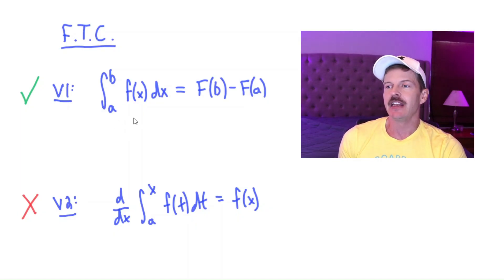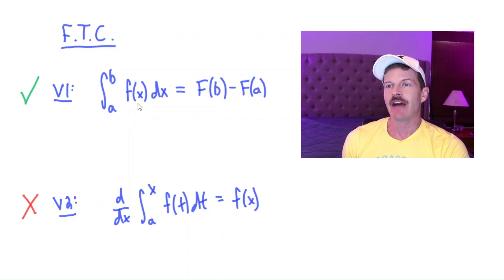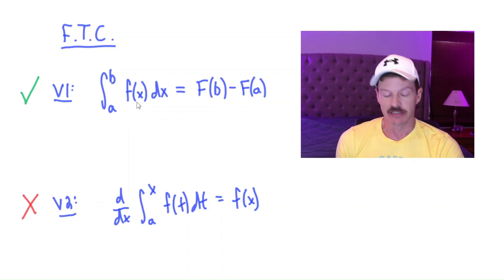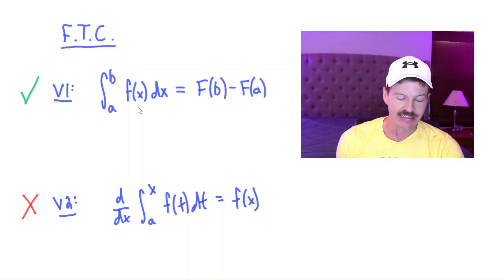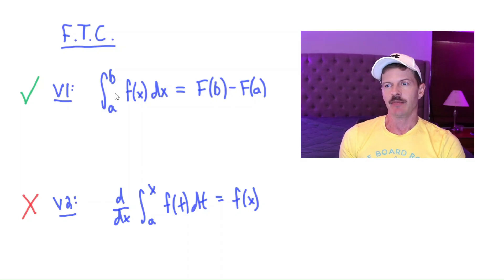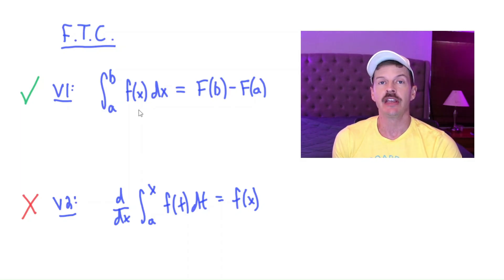Remember, the definite integral means the area underneath the graph of f between a and b — assuming f is a positive function. If f is not positive, we mean the net signed area between the graph of f and the interval a to b. But why is this true? Why can we find an area by doing an antiderivative?